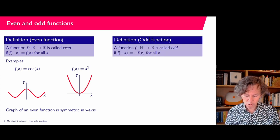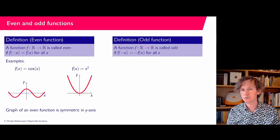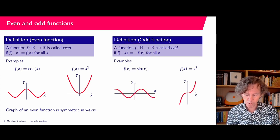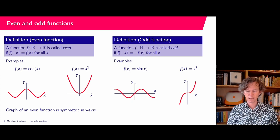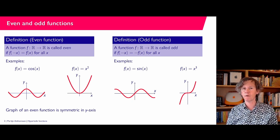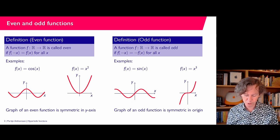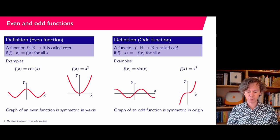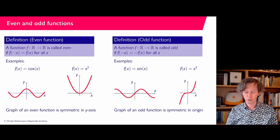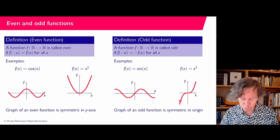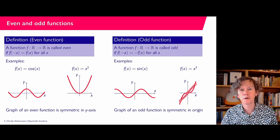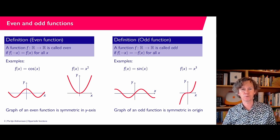Odd functions have the property that f of minus x equals minus f of x. Simple examples are sine of x, x to the power of 3, x to the power of 5, x to the power of 13 — x to the power of any odd number has this property. The graph of an odd function is symmetric in the origin: if you take a point, draw a line to the origin, and extend it the same distance to the other side, you see this point symmetry.